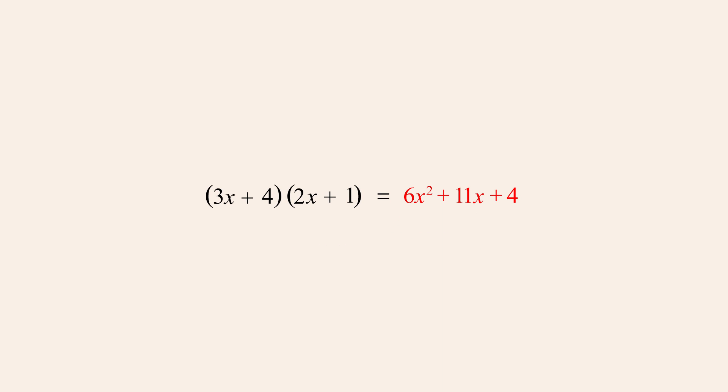So using the FOIL method, this product of binomials was produced by multiplying the first terms, the outer terms, the inner terms, and the last terms of the two binomials.